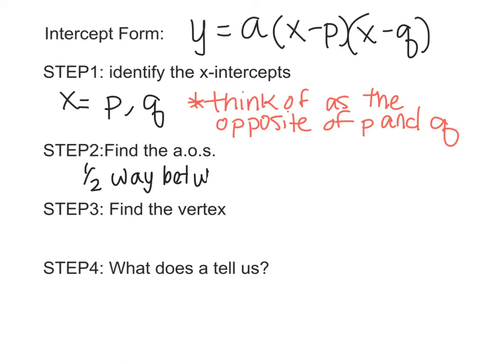The x-intercepts have to be evenly spaced around the axis of symmetry. So we know the axis of symmetry is halfway between the x-intercepts.